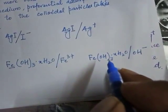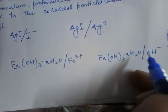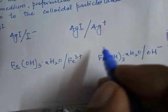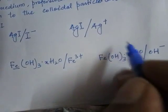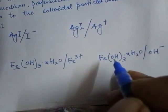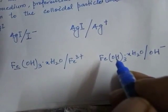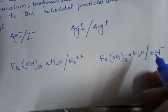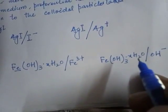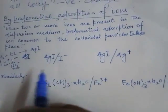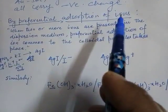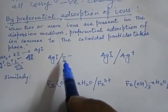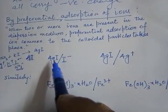Similarly, in another method of preparation, hydroxide ion OH⁻ is preferentially adsorbed, since OH⁻ is a component of the sol particle. OH⁻ is adsorbed in preference to other ions present in the solution. So colloidal particles adsorb preferentially the ions that are common to them — ions already present as part of the particle's composition.